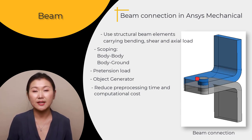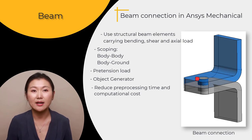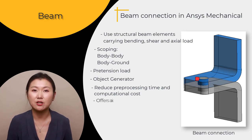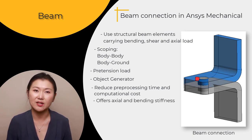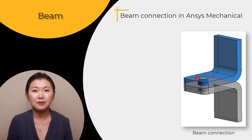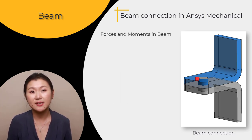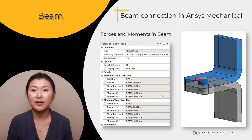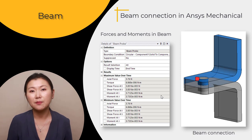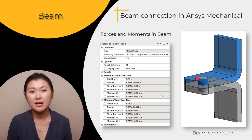Similar to springs, beam connections help reduce the preprocessing time and computational cost involved in simulating 3D models of fasteners in an assembly. The difference is that a spring has stiffness only along its length, whereas a beam connection offers axial and bending stiffness. For a beam connection, one would be interested in the forces and moments generated within the beam, which can be evaluated using the beam probe. The drag-and-drop tip shared earlier for spring probes is applicable for beam probe as well.